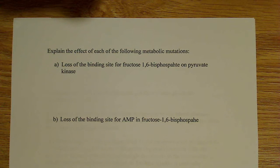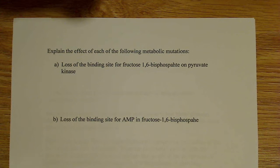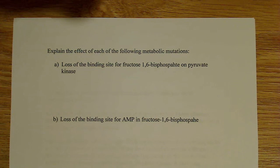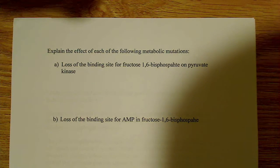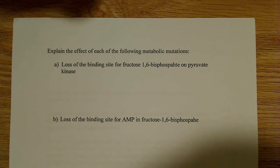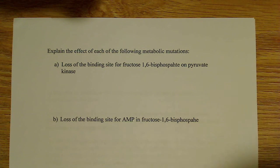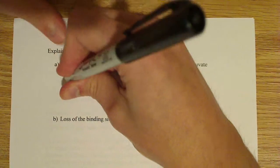In this video I want to start working on a couple of different metabolic mutations and what effects they might have on the different metabolic pathways. So let's jump right into it. It says the loss of the binding sites for fructose 1,6-bisphosphate on pyruvate kinase. Pyruvate kinase is an enzyme that's involved in glycolysis.